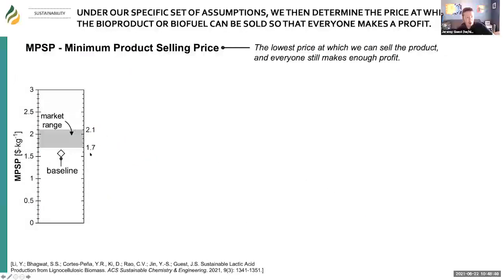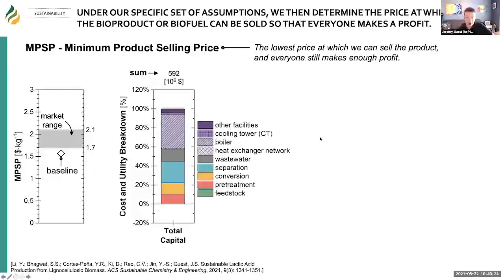Ultimately, we get a minimum product selling price or minimum fuel selling price. For lactic acid, this is the lowest price at which we can sell the product such that everyone still makes enough profit — farmers, the biorefinery, everyone. In this example, we have a baseline performance shown as a diamond, and it's below the market range, meaning below what lactic acid actually sells for — which is a good thing. With TEA, we can also break down what the driving forces are: what's causing those costs. We can see that the boiler is expensive, separations are expensive, and so on.